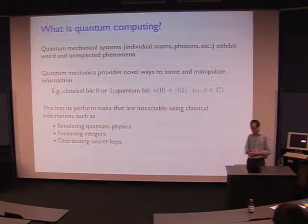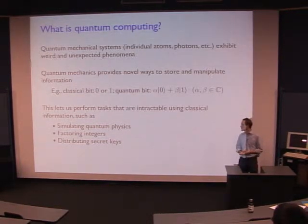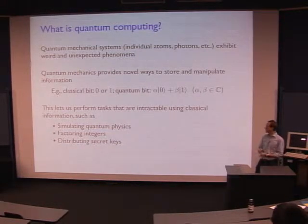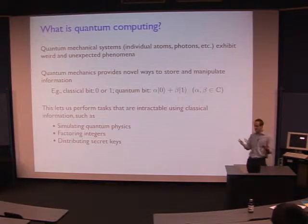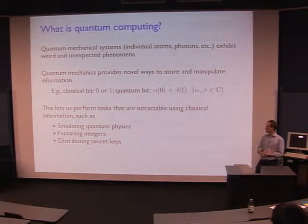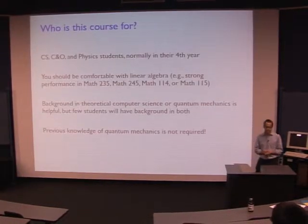The idea of this course is to explore this model of quantum information processing and to look at some of these applications where you can do something a lot better, taking advantage of quantum mechanics. For example, we'll talk about a quantum algorithm that can be used to factor integers in polynomial time, and this is something that we don't think we can do with classical computers.